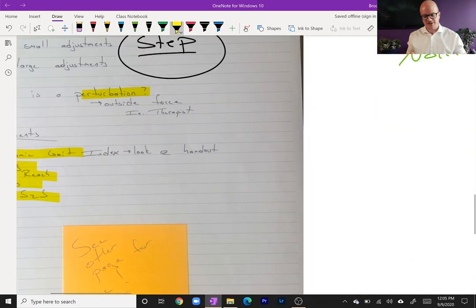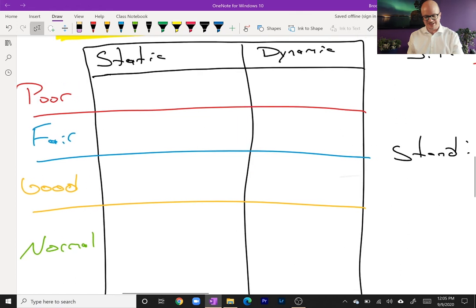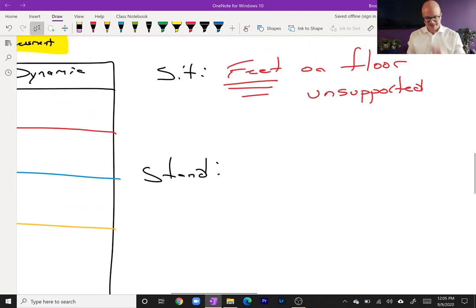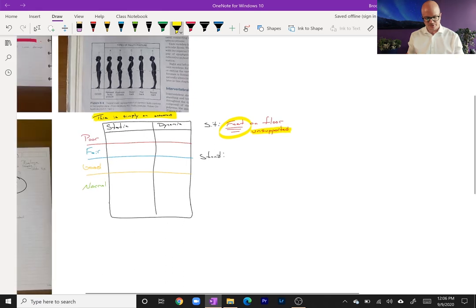But to start with balance, let's stay basic. So we have our two types of balance and we have four grades. So we have static and dynamic, and we're going to look at sitting and standing. When we look at seated posture or seated balance, it's assumed that the feet are on the floor. Obviously, though, if you lift a patient up on a table higher and their feet aren't on the floor, we need to reassess their balance because we've totally changed the size of their base of support. And of course, standing is just standing. So when I say feet on the floor, unsupported, that means I'm not leaning against a part of a chair.